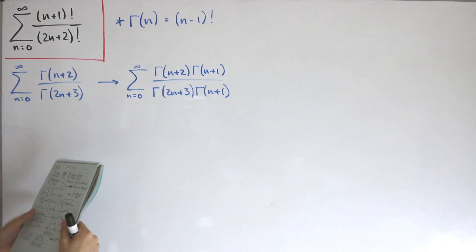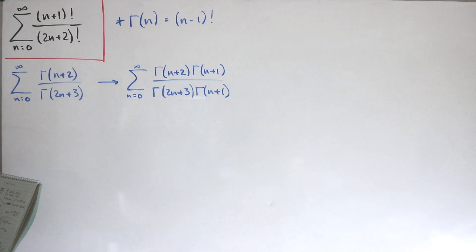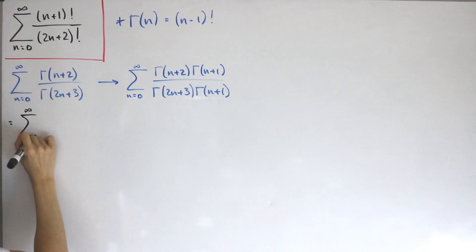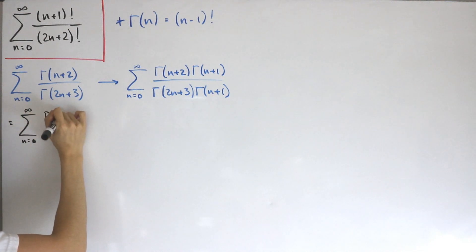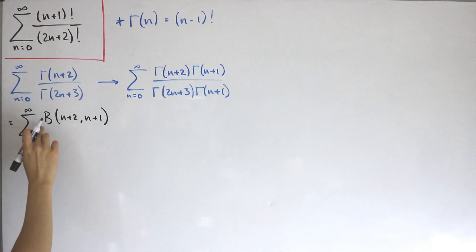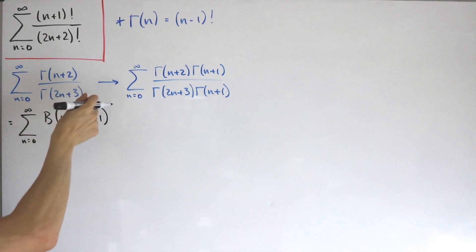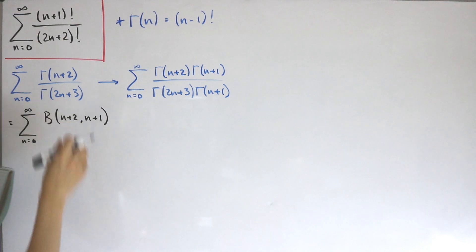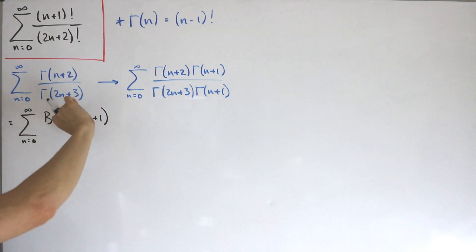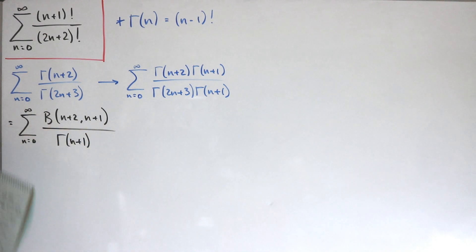Using the relationship between the gamma function and the beta function, we can write this as the infinite sum from n=0 of B(n+2, n+1) — I wrote it in this order purposely because the next step is a little simpler to evaluate this way, as you'll see — divided by Γ(n+1).